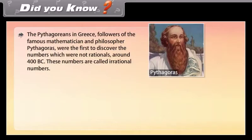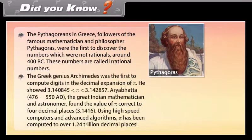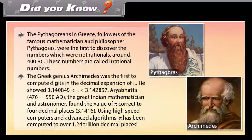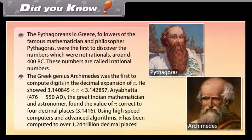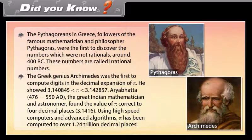Did you know? The Pythagoreans in Greece, followers of the famous mathematician and philosopher Pythagoras, were the first to discover numbers which were not rationals, around 400 BC. These numbers are called irrational numbers. The Greek genius Archimedes was the first to compute digits in the decimal expansion of pi, showing 3.140845 < π < 3.142857. The great Indian mathematician Aryabhata (476–550 AD) found the value of pi correct to 4 decimal places: 3.1416. Using high-speed computers and advanced algorithms, pi has been computed to over 1.24 trillion decimal places.